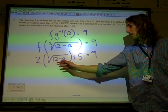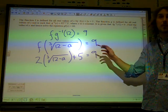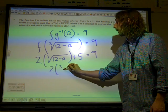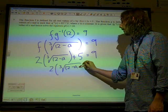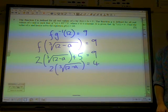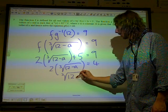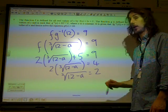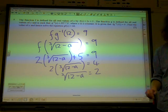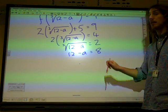Let's not worry about the fact that this is a bit of a mess in here. We've got twice something plus 5 equals 9, so we can unpick that to start with. That would be 2∛(12 - a) = 4. If we take the 5 away from both sides, if we divide both sides by 2, we've got ∛(12 - a) = 2. I want to get rid of that cube root now, so I'm going to cube both sides. 12 - a = 8.